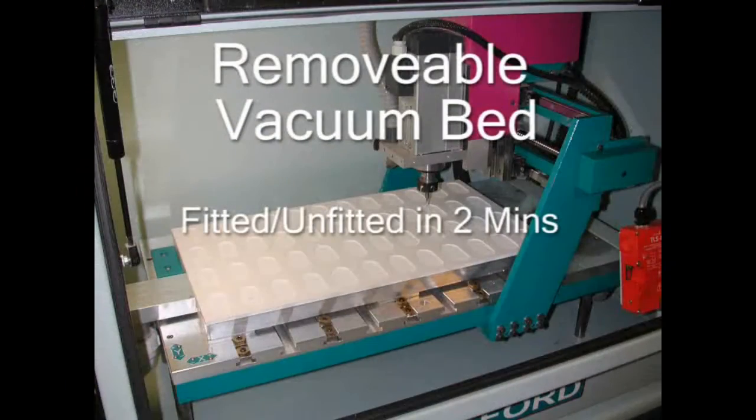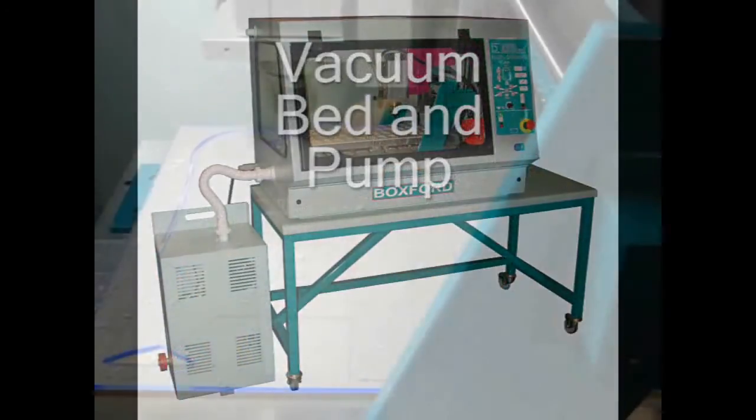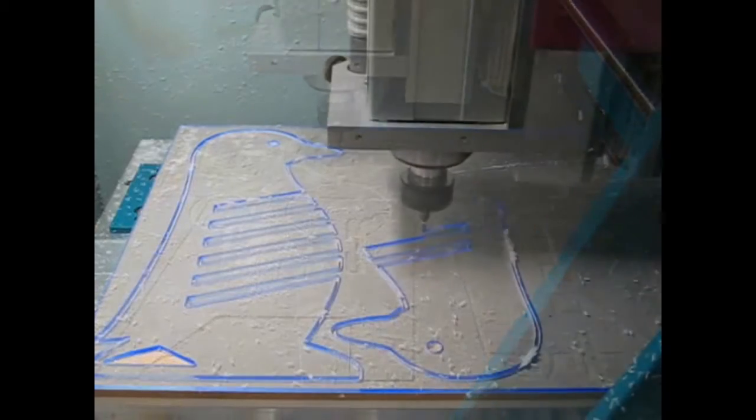Our VAT Bed and Pump eliminates the need for tapes or screws to clamp sheet materials securely. The VAT Bed and Pump sucks through 6mm MDF sacrifice board to hold the material in place.